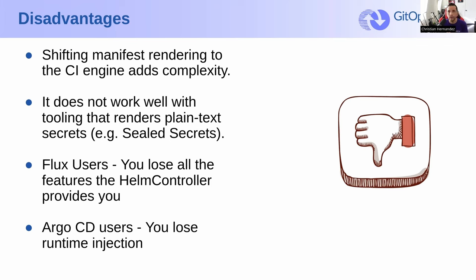If you're still using sealed secrets, that's a consideration you need to take into play. For Flux users, there's a disadvantage: you lose all the features that the Helm controller provides. If you're really into Helm, you're basically switching from using Helm to plain manifests — from Helm to 'helm template'. You lose things like 'helm lookup', which a lot of people rely on. And for Argo CD users, by the same vein, you lose runtime injection. A lot of Argo CD users like to inject the application's name into the configuration to differentiate it from one environment to another — you lose that as well. So these are some of the things you need to keep in mind about using rendered manifests.